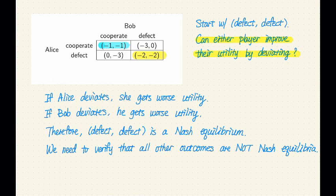Well, let's consider Alice. So if Alice chooses to defect instead of cooperate, she gets a utility of 0 instead of minus 1. So defect is clearly better. If Alice wants to deviate, then both cooperating is not a Nash equilibrium.